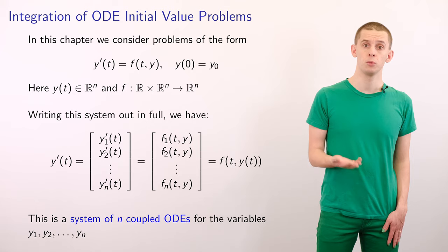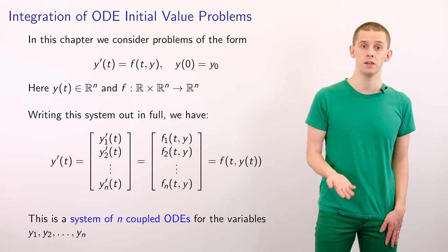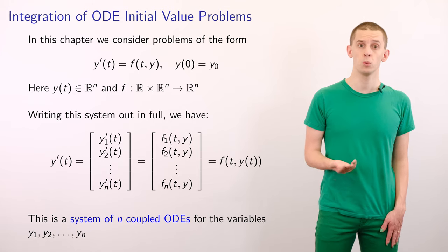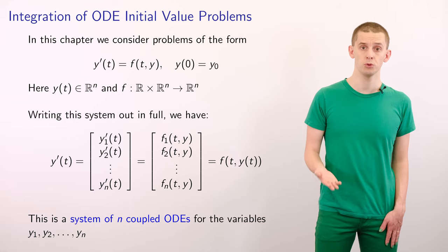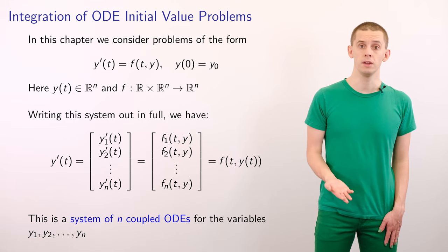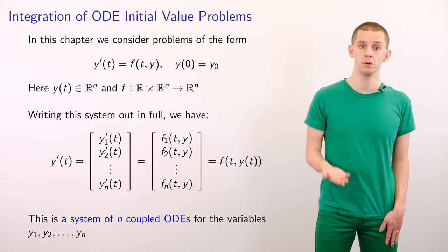We're now going to look at problems of the form y prime of t is equal to f of t and y, with the condition that y of 0 is equal to y subscript 0. And here, y of t is an n-dimensional function.